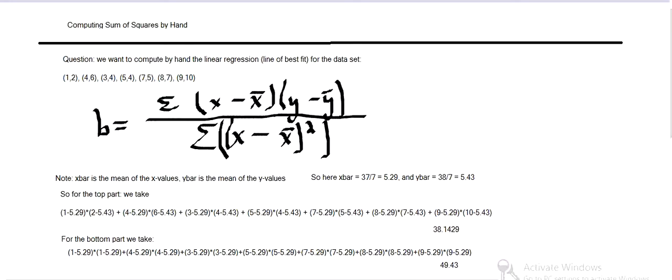And then we divide those two to give the slope for the regression. So that gives 38 over 49 about, so 0.77 approximately.